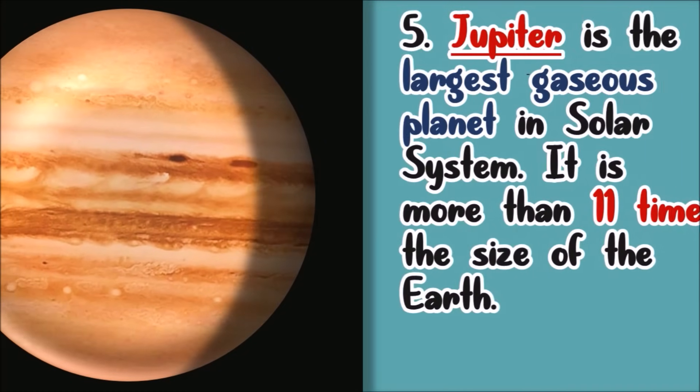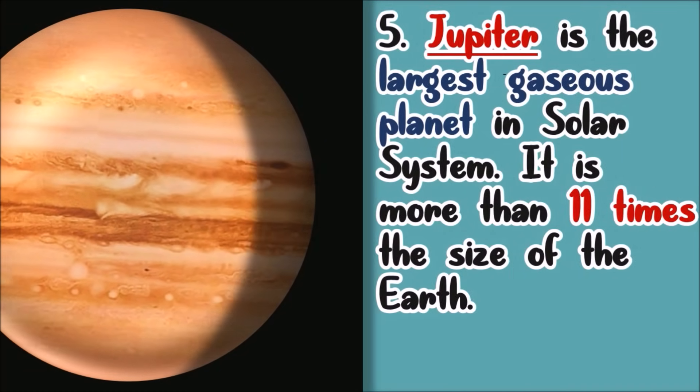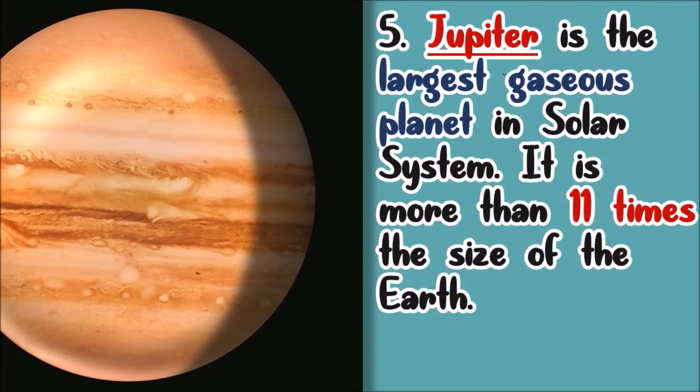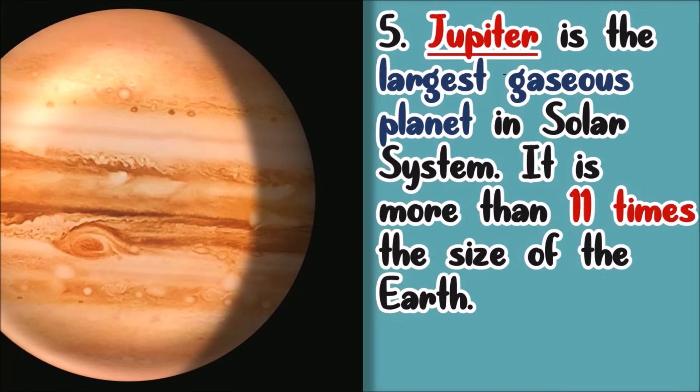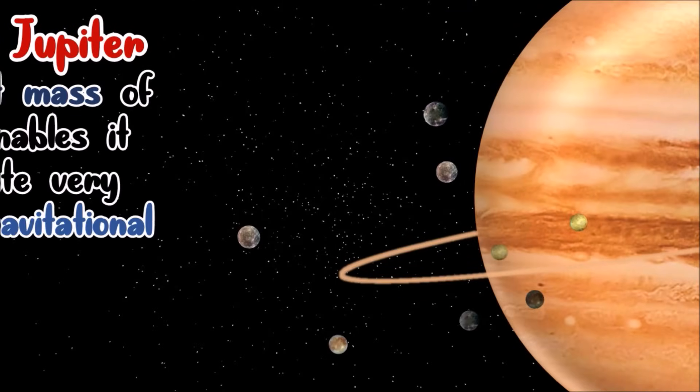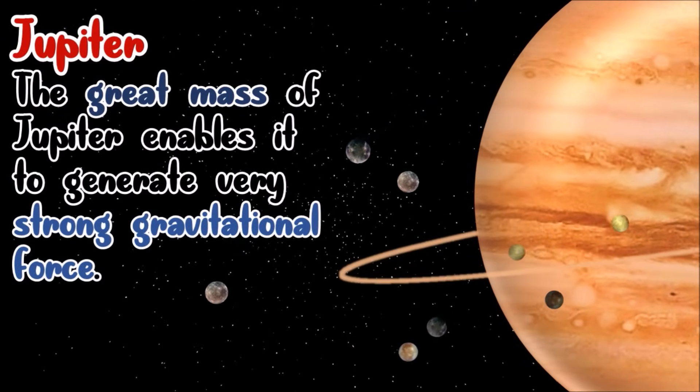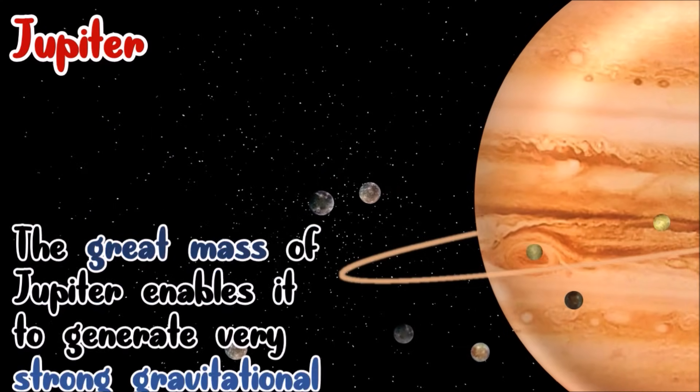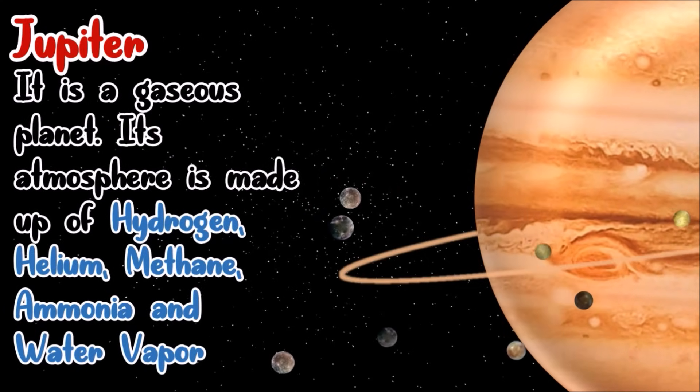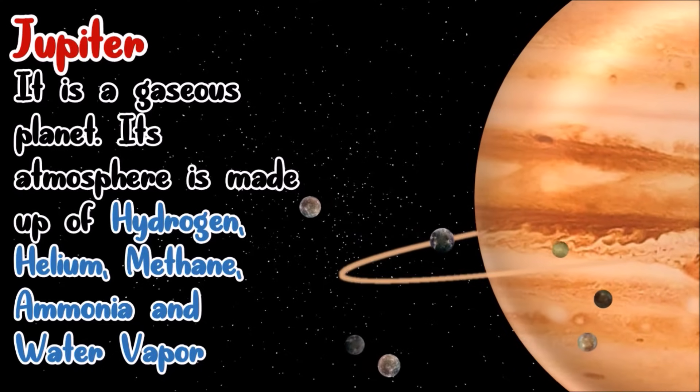This is Jupiter. Jupiter is the largest gaseous planet in our solar system. It is more than 11 times the size of Earth. The great mass of Jupiter enables it to generate very strong gravitational force. Jupiter is a gaseous planet. Its atmosphere is made up of hydrogen, helium, methane, ammonia, and water vapor.